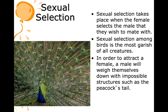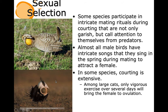Sexual selection takes place when the female selects the male she wishes to mate with. Sexual selection among birds is the most garish of all creatures — in order to attract a female, a male will weigh himself down with impossible structures such as a peacock's tail. Some species participate in intricate mating rituals during courting that call attention to themselves from predators. Almost all male birds have intricate songs they sing in the spring to attract females.